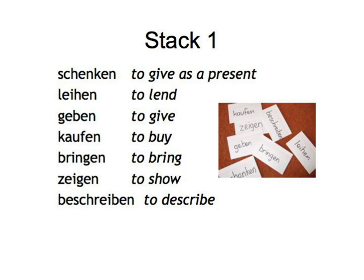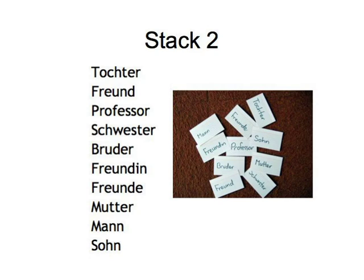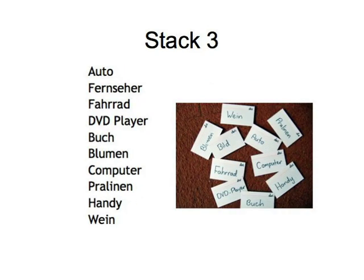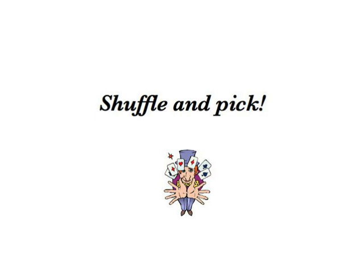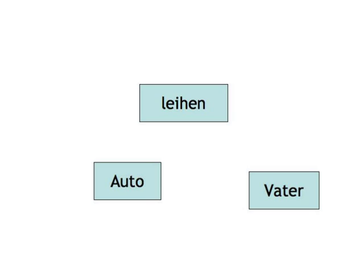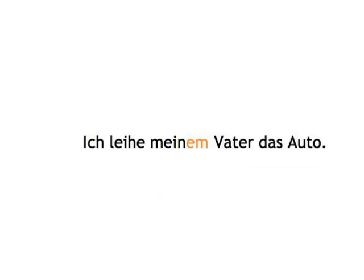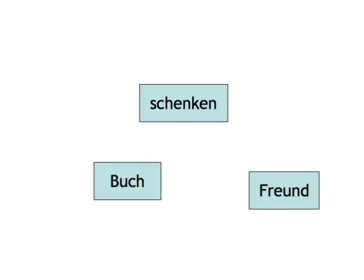Make another stack with people — like Tochter, Freund, Professor — and a third one with different object nouns like Auto, Fernseher, Fahrrad. Shuffle the stacks, take the top card of each, and form a sentence using the respective verb, person, and thing. For example, if you pick Leihen, Vater, Auto, you form the sentence: Ich leihe meinem Vater das Auto. If you pick Schenken, Freund, Buch, you form: Ich schenke meinem Freund ein Buch.